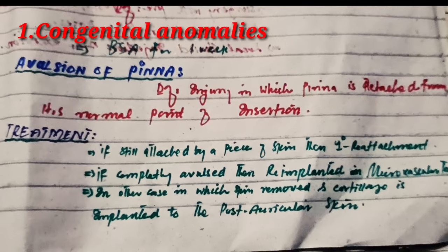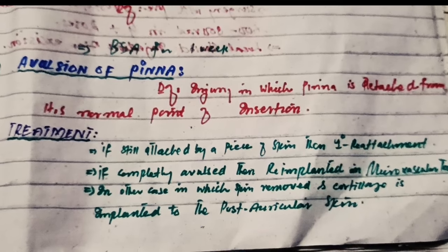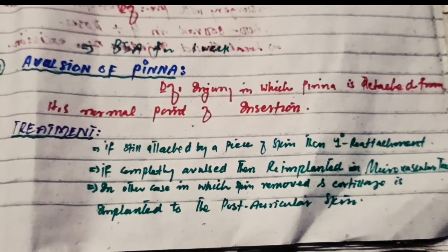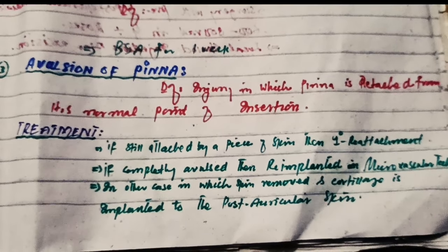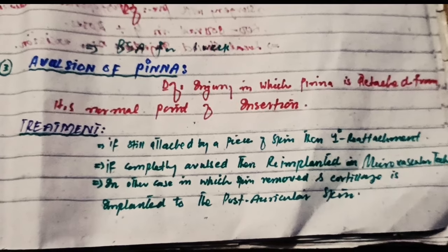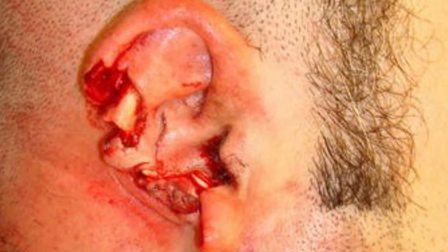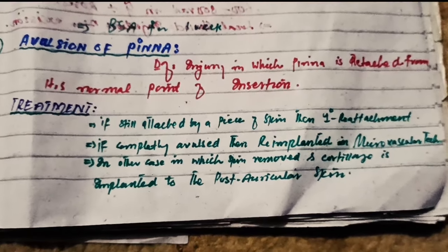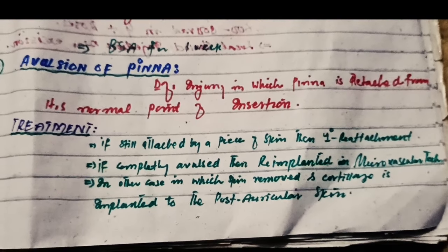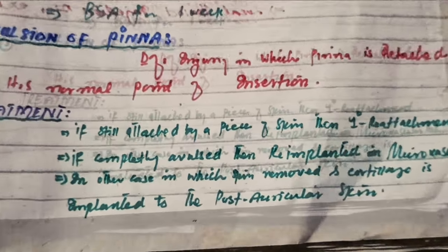You can find the link to previous videos in the description. In this video I am going to talk about avulsion of the pinna. Avulsion is actually the detachment of the auricle from its normal point of insertion. This condition is caused by trauma to the auricle.